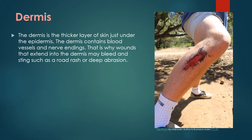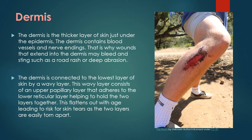Next is the dermis. The dermis is the thicker layer of skin just under the epidermis. The dermis contains blood vessels and nerve endings. That's why wounds that extend into the dermis may bleed and sting, such as road rash or deep abrasion. The dermis is connected to the lowest layer of skin by a wavy layer, consisting of an upper papillary layer that adheres to the reticular lower layer, helping to hold the two layers together. This flattens out with age, leading to risk for skin tears as the two layers are easily torn apart.